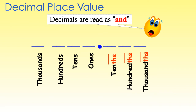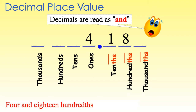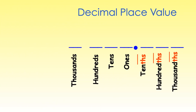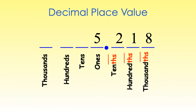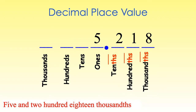Decimals are read using the word 'and.' For example, this number is read as four and eighteen hundredths. This number is read as five and two hundred eighteen thousandths. When reading a decimal number, we read the numbers to the left of the decimal point as we would read any ordinary number. When we get to the decimal point, we say 'and.' Then we read the number to the right of the decimal point as if it were any ordinary number. The only difference is we identify the place of the last digit. In this example, the place of the last digit is the thousandths place — the eight is in the thousandths place.